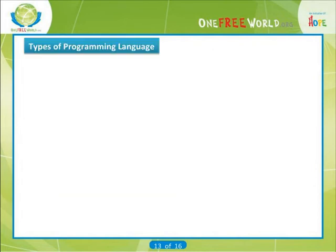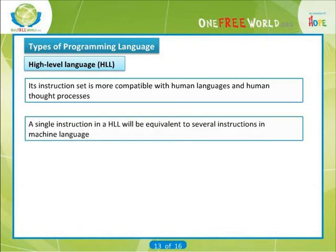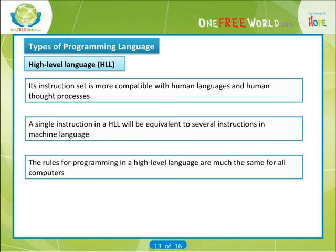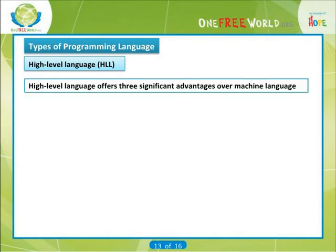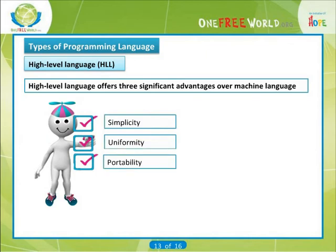Usually, a computer program will be written in some high-level language whose instruction set is more compatible with human languages and human thought processes. Most of these are general purpose languages, such as C. Some other popular general purpose languages are Pascal, Fortran, and BASIC. As a rule, a single instruction in the high-level language will be equivalent to several instructions in machine language. This greatly simplifies the task of writing complete, correct programs. Furthermore, the rules for programming in a particular high-level language are much the same for all computers, so that a program written for one computer can generally be run on many different computers with little or no alteration. Thus, a high-level language offers three significant advantages over machine language: simplicity, uniformity, and portability — that is, machine independence.